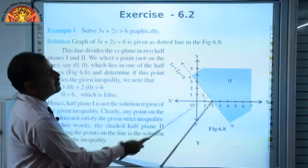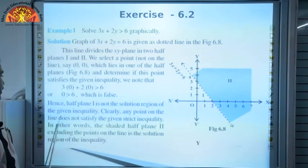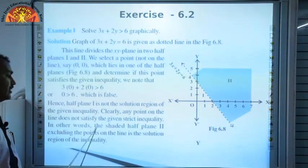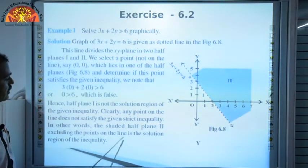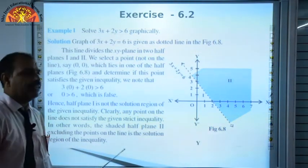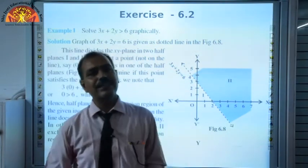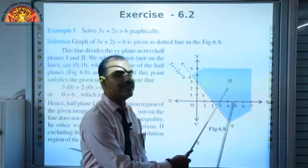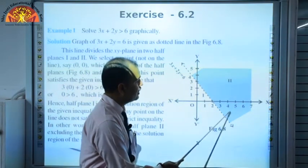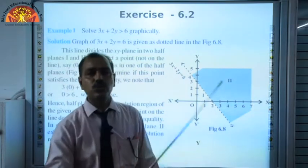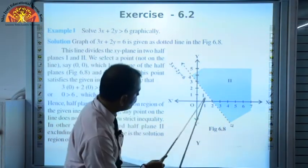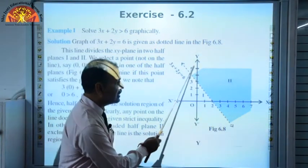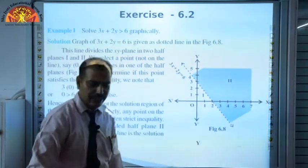Therefore, the half plane containing the origin is not the solution region. The shaded half plane — the second half, excluding the points on the line — is the solution region of the inequality. If the inequality had been true at origin, we would shade the first part. Since it is false, we shade the second part (the far side from the origin).